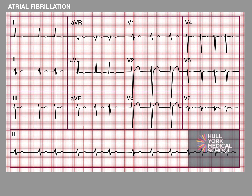Instead, we count the number of QRS complexes in the rhythm strip at the bottom and multiply by 6. Remember the ECG records for 10 seconds, so multiplying by 6 gives the number of complexes per minute. Here I think there are 13 QRS complexes in that 10 seconds, so multiplied by 6 gives a rate of 78 beats per minute. The QRS complexes are narrow — less than 120 milliseconds. So we can conclude this is a narrow complex irregular rhythm at approximately 80 beats per minute with no discernible P waves: likely rate-controlled atrial fibrillation.